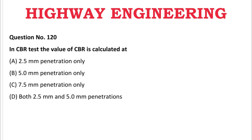Next question: In CBR test, the value of CBR is calculated at — A: 2.5 mm penetration only, B: 5 mm penetration only, C: 7.5 mm penetration only, D: both 2.5 mm and 5 mm penetrations. The correct answer is D, both 2.5 mm and 5 mm penetrations.